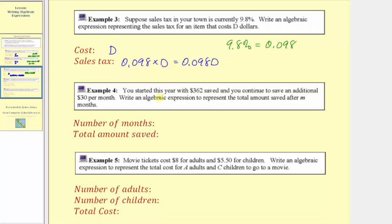Example four: you started this year with three hundred sixty-two dollars saved, and you continue to save an additional thirty dollars per month. Write an algebraic expression to represent the total amount saved after m months. The total number of months saved is represented by the variable m. The total amount saved after m months would be three hundred sixty-two, plus thirty times m, or just thirty m. So the expression is three hundred sixty-two plus thirty m.